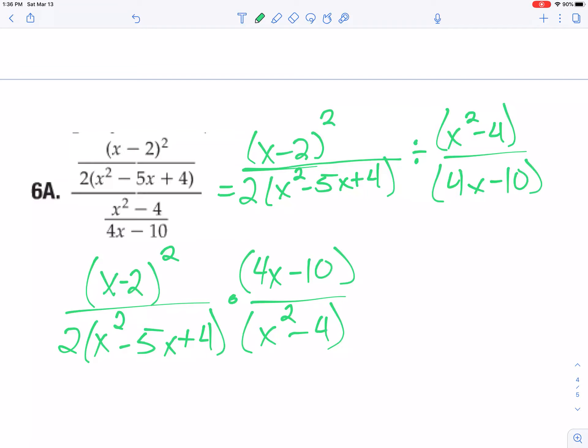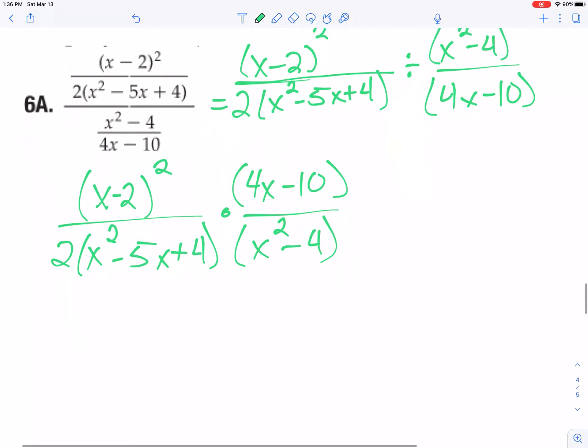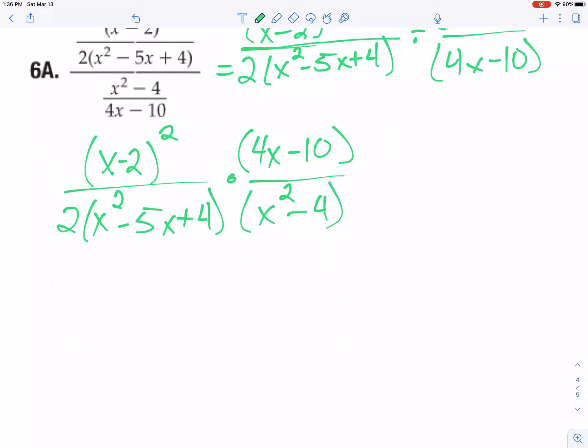This one does have a funky factoring one in there, so I'm going to go ahead and solve this all the way. The x minus 2 quantity squared, I'm going to go ahead and write that fully to be x minus 2, x minus 2 because that might help me visualize when things cancel later.